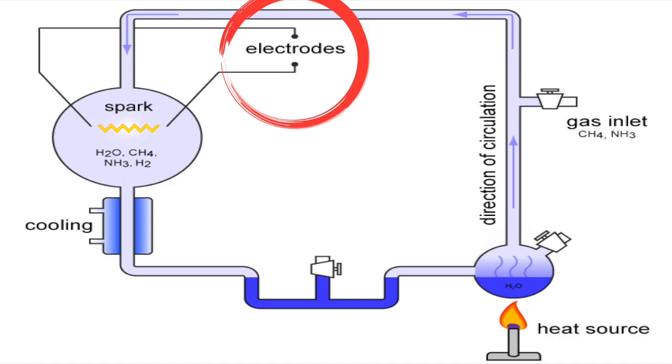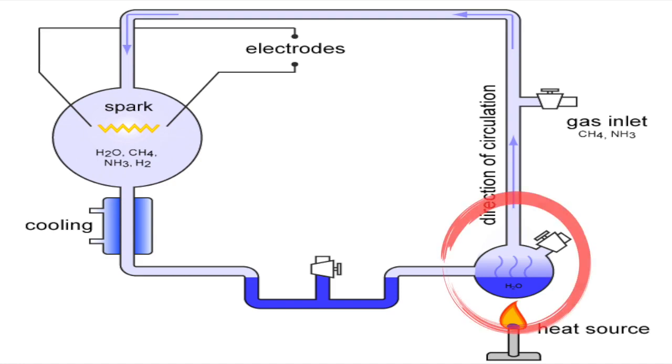What he found was that after one or two days of continuously boiling and sparking this solution, the mixture in the bottom right flask representing the ocean began to change colors. It turned to a pinkish color, and after about a week it turned to dark red and it was cloudy. Miller knew that something had happened and that new products, new molecules, had formed in the solution.